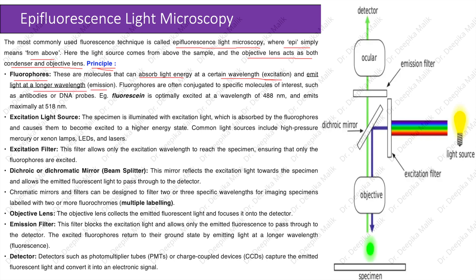The principle: fluorophores are molecules that can absorb light energy at a certain wavelength, known as excitation, and emit light at a longer wavelength, known as emission. Fluorophores are often conjugated to specific molecules of interest such as antibodies or DNA probes. For example, fluorescein is optimally excited at 488 nanometers and emits maximally at 520 nanometers.